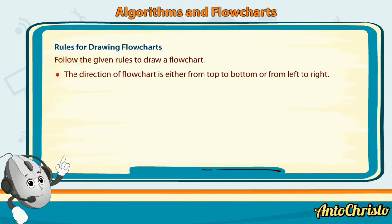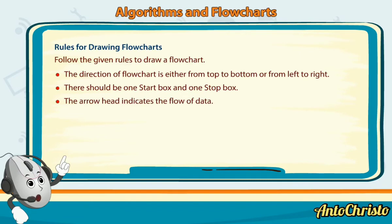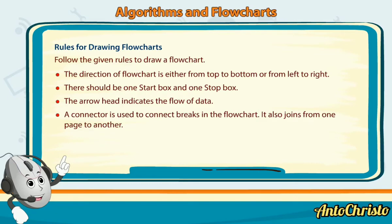Rules for Drawing Flowcharts. Follow the given rules to draw a flowchart. The direction of flowchart is either from top to bottom or from left to right. There should be one start box and one stop box. The arrowhead indicates the flow of data. A connector is used to connect breaks in the flowchart. It also joins from one page to another.